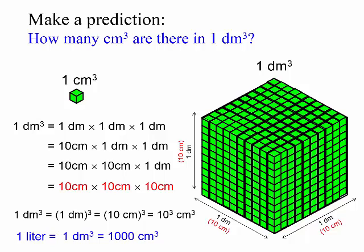1 liter is equal to 1 decimeter cube, which is equal to 1 thousand centimeter cubes.